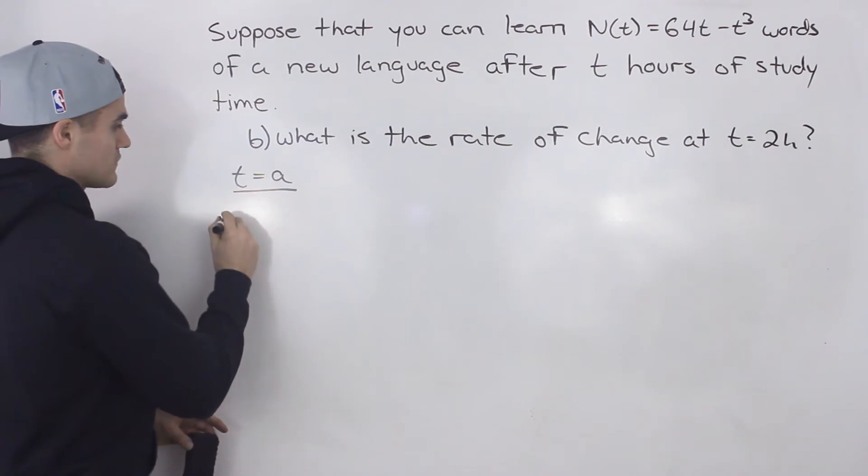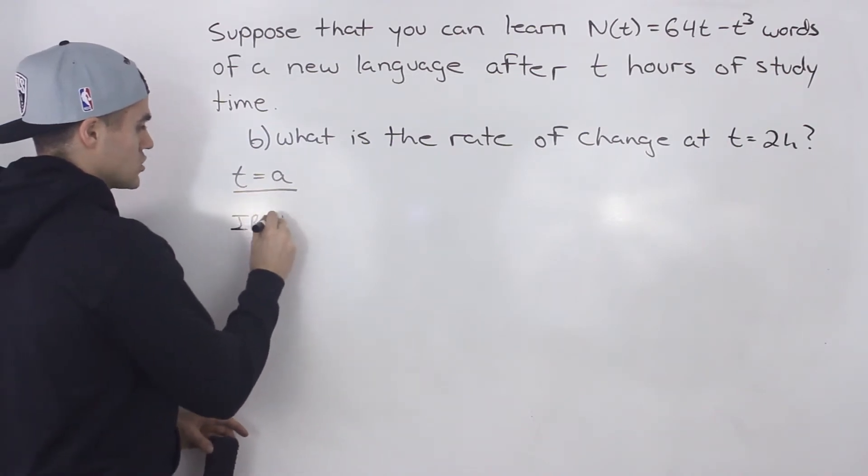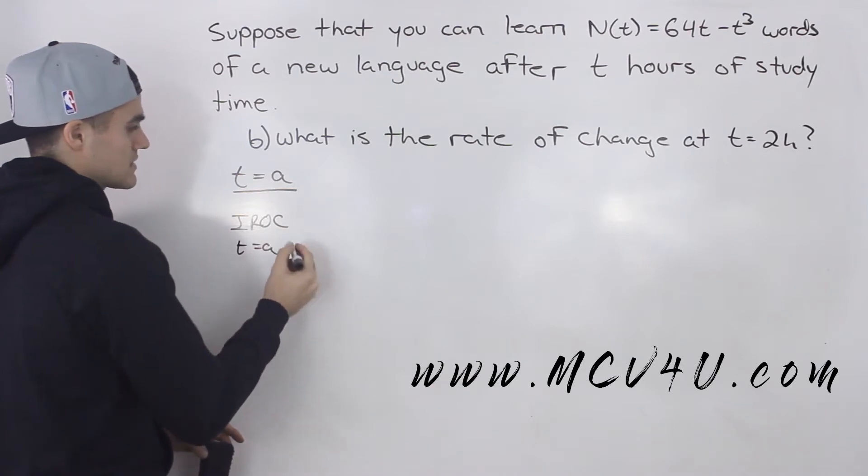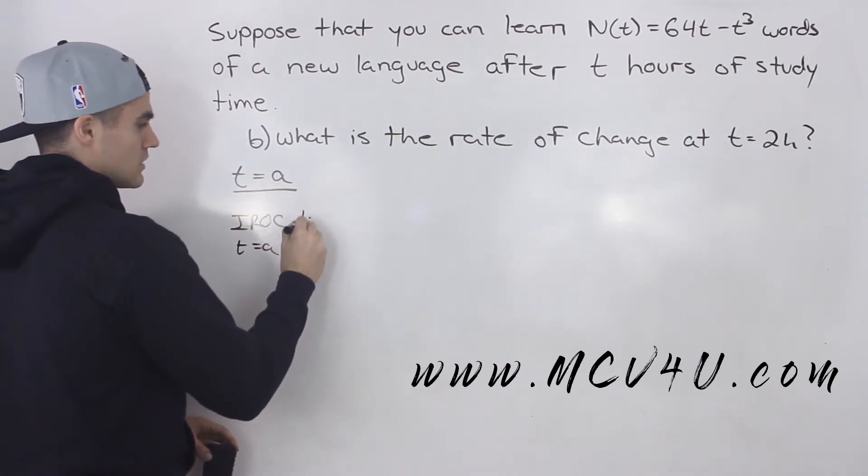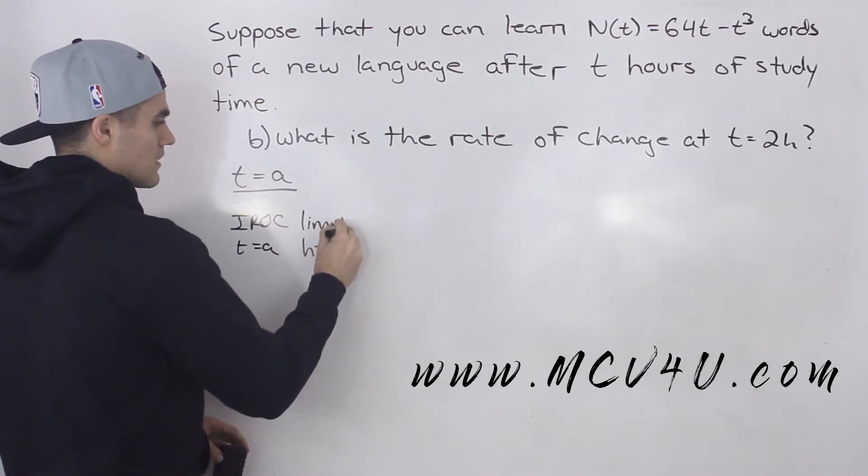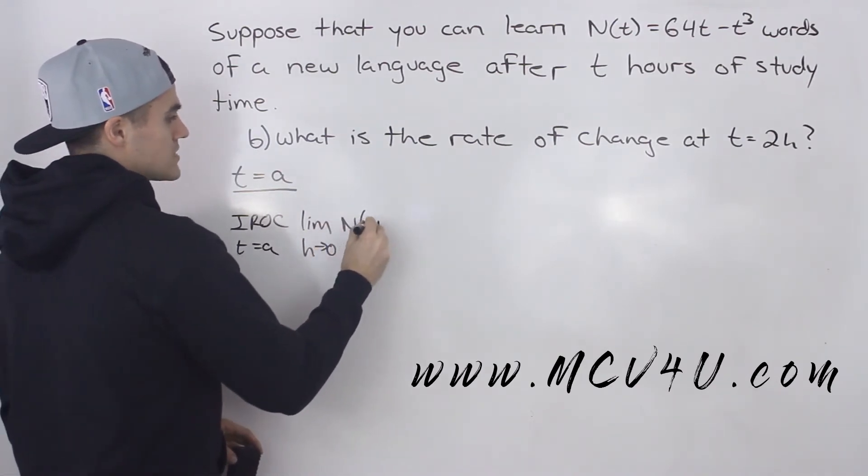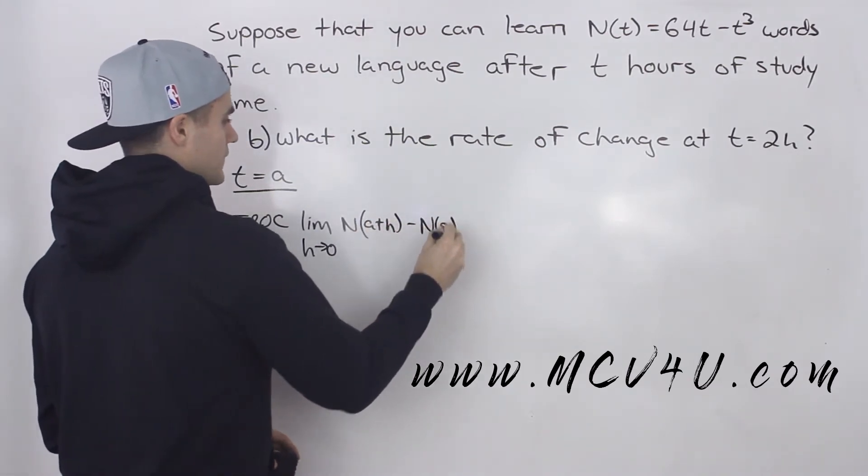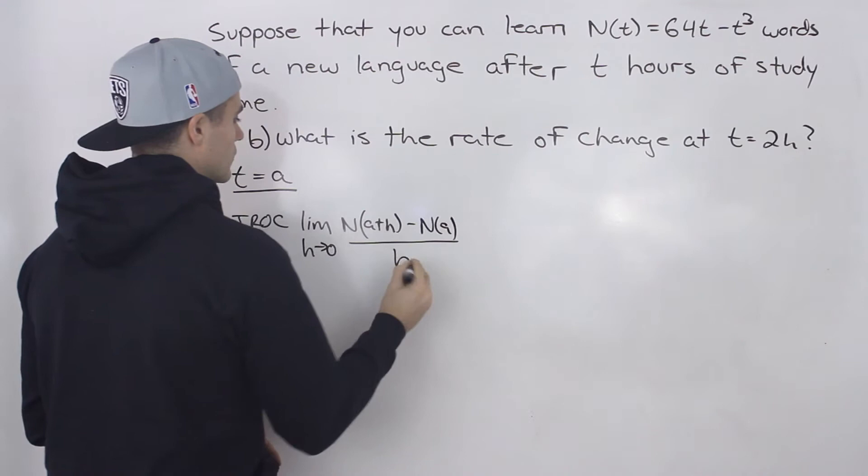So to find that instantaneous rate of change when t is equal to A, that's going to be what? We're going to use the difference quotient. So the limit as h approaches zero of N(a+h) minus N(a) all over h.